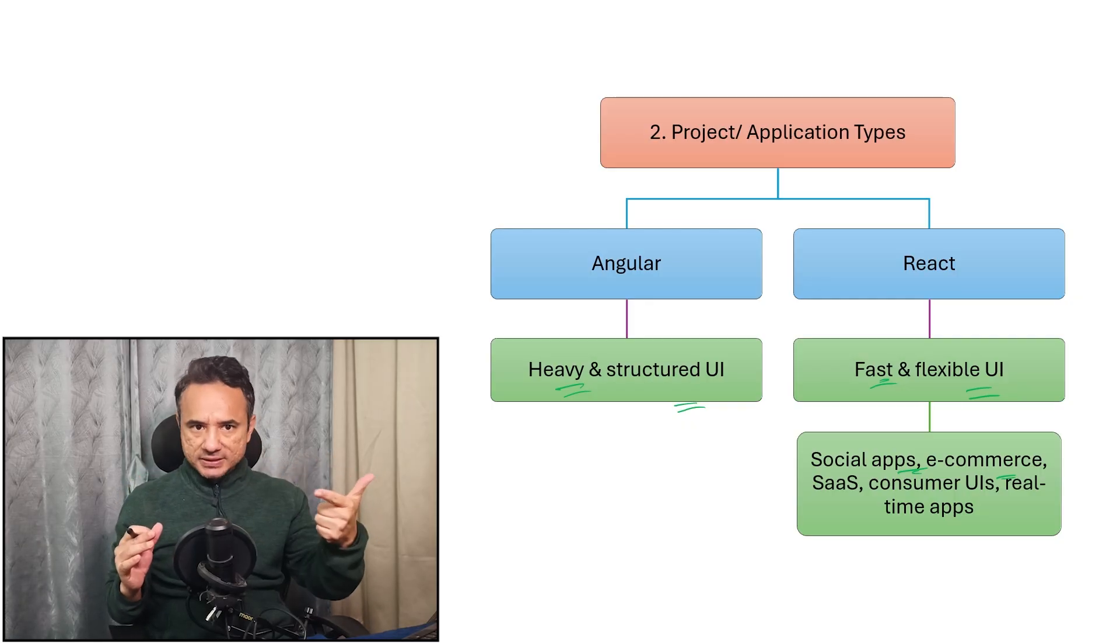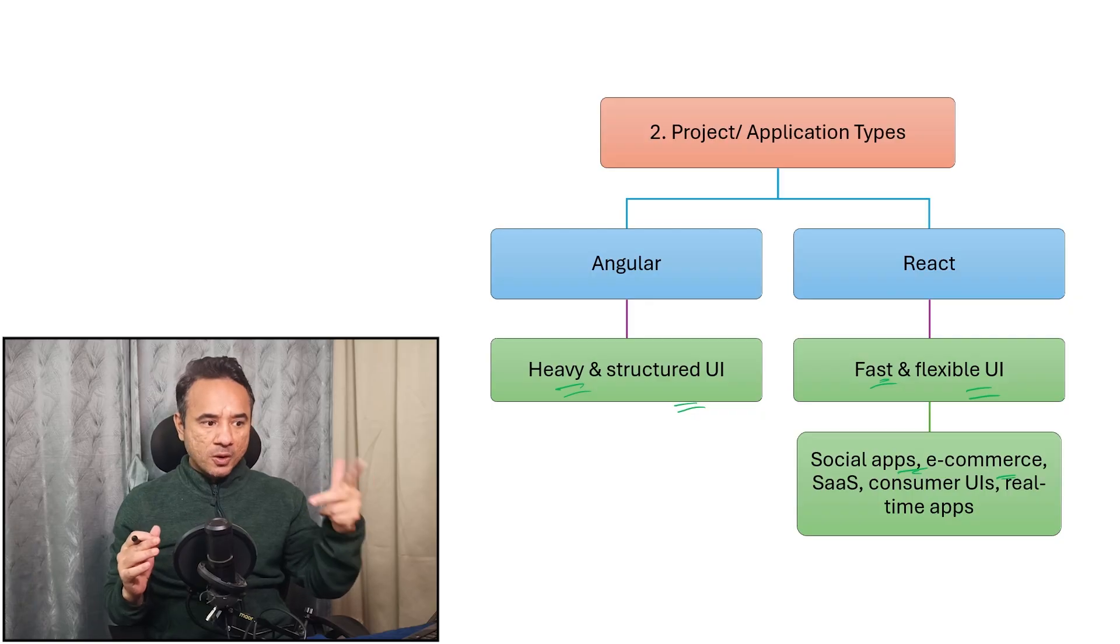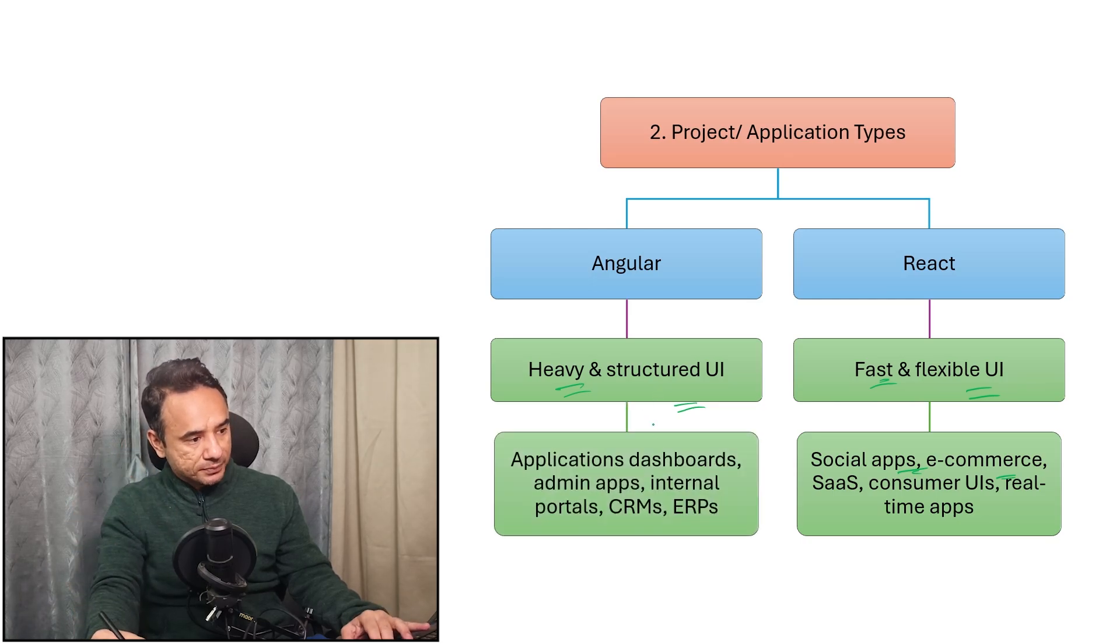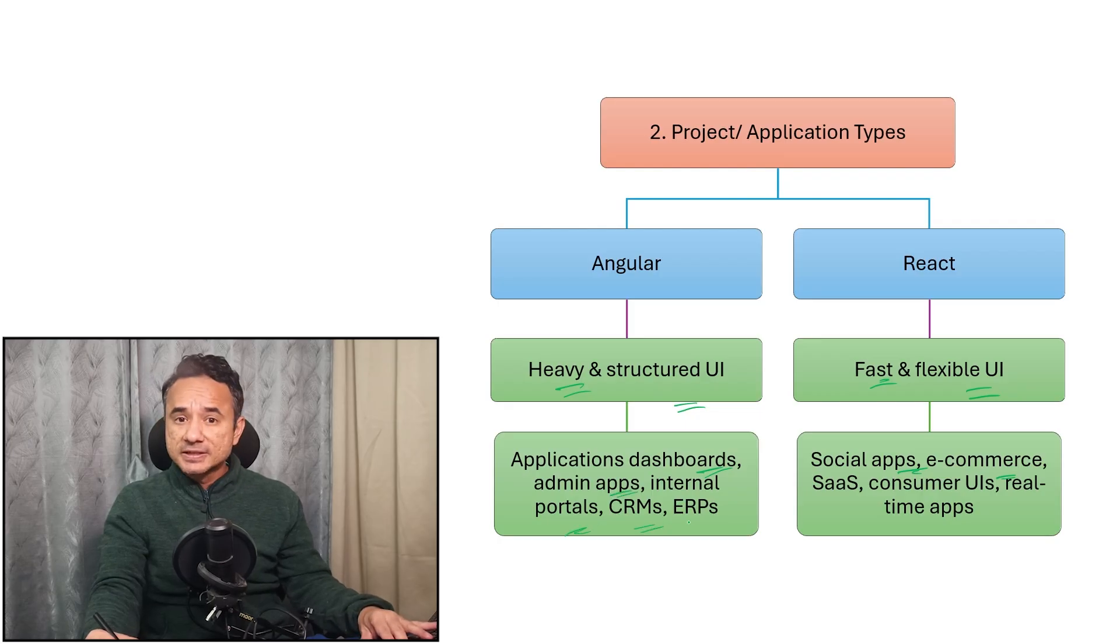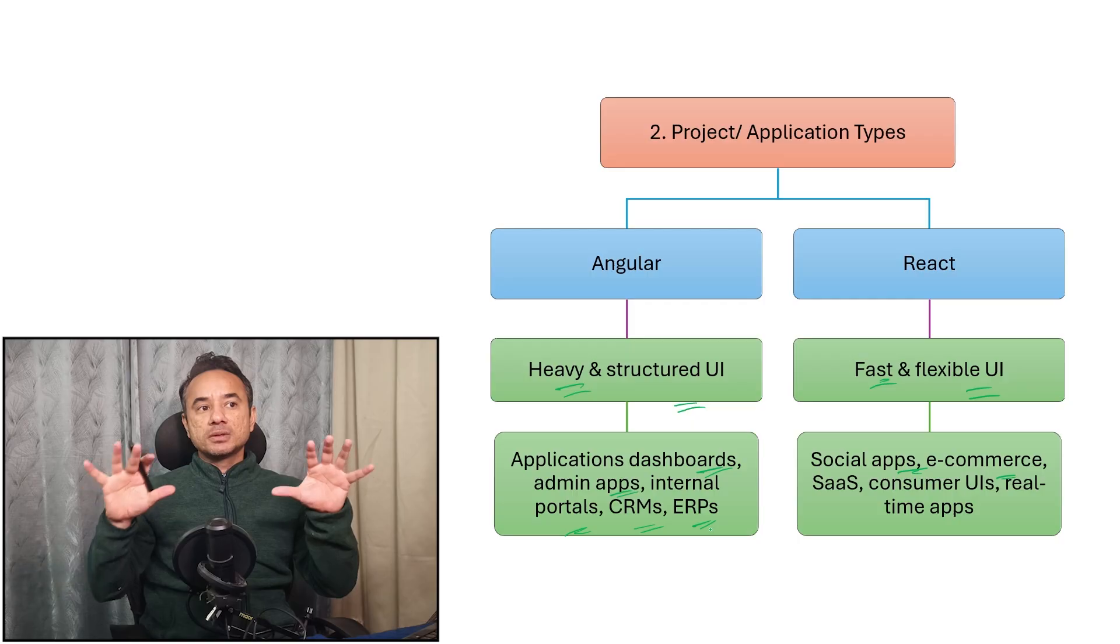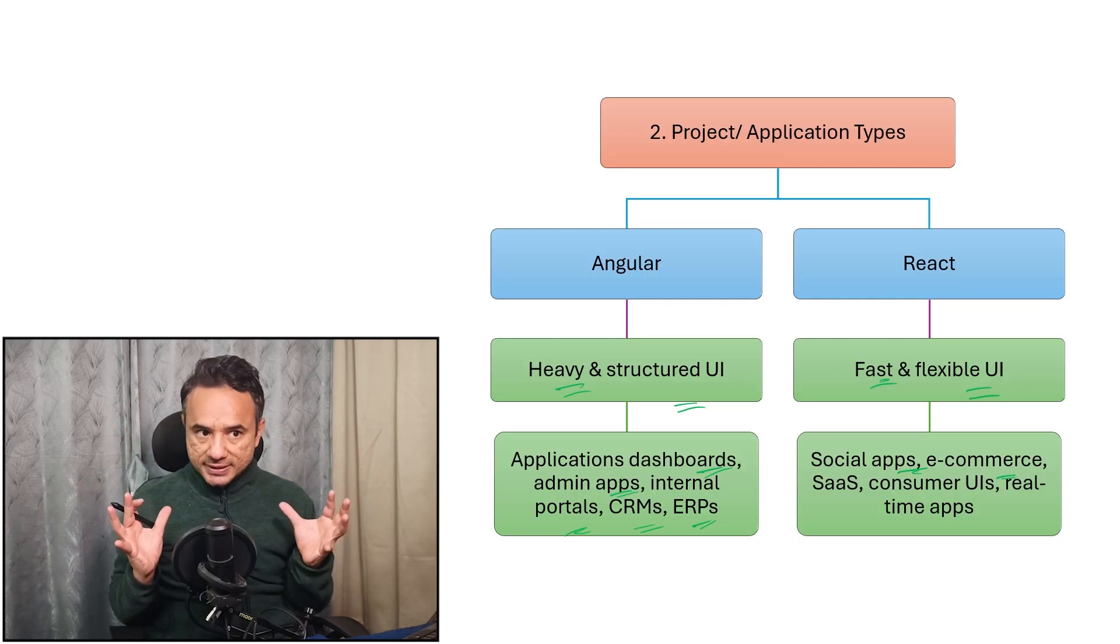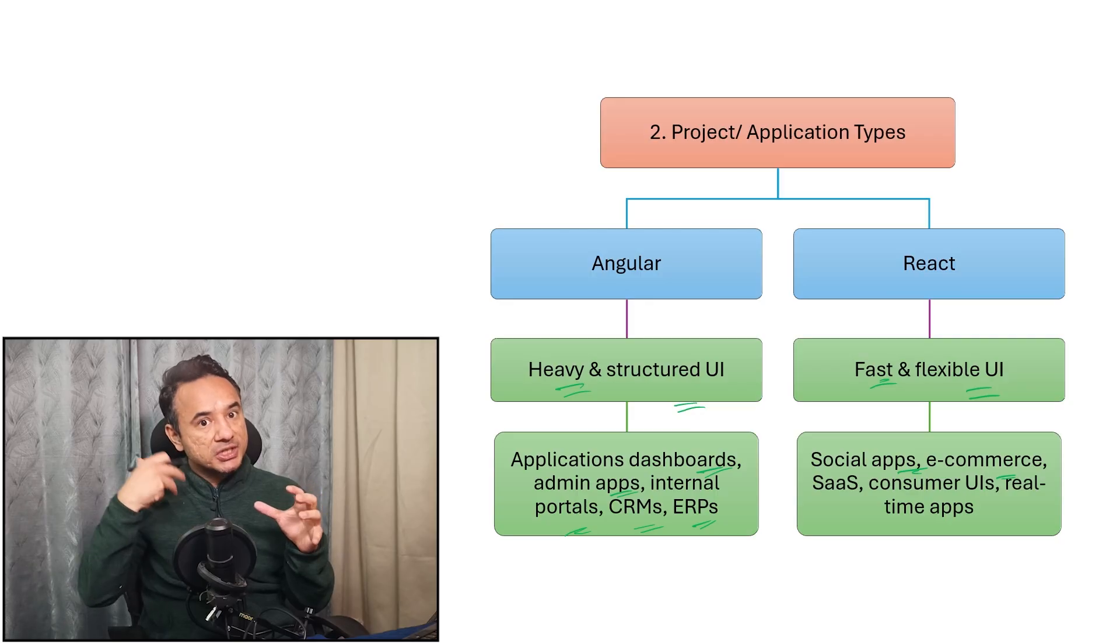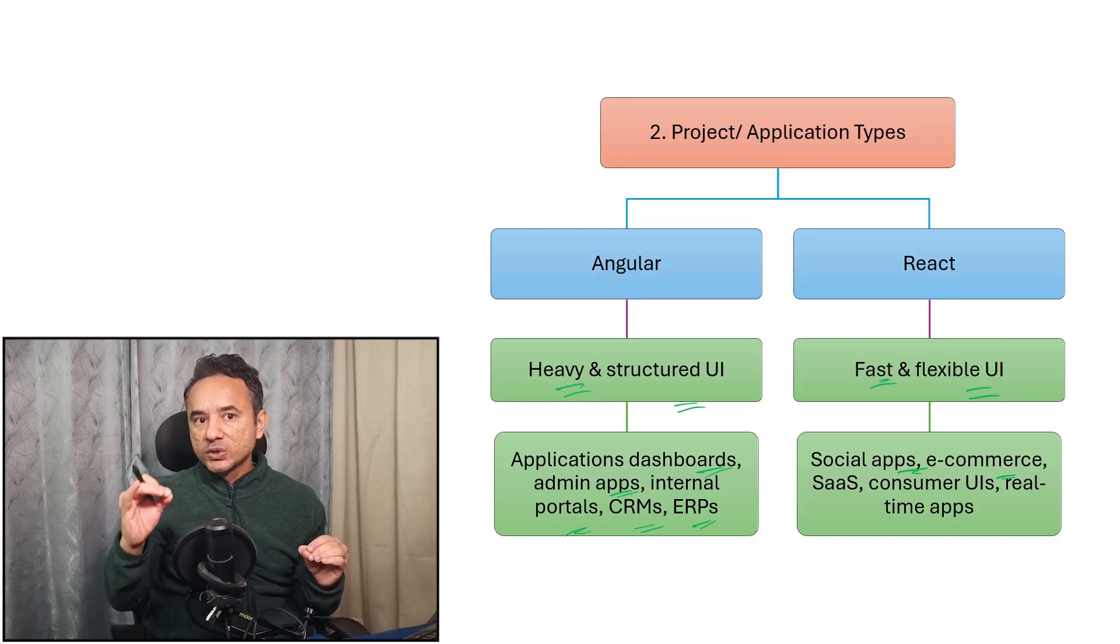The apps which are common public using, their speed matters because public faces internet issues. So for that React is considered good, it is fast. On the other hand, Angular is used for heavy structured UI apps for enterprises. For example, these large dashboards with multiple components, admin apps, internal portals, CRMs, ERPs. These apps are big long-term projects and need a proper structure for big projects.